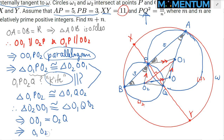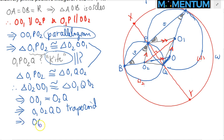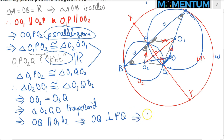So O1O2QO is a trapezoid — by symmetry the bases are parallel. OQ is a base parallel to O1O2. But earlier we know O1O2 was perpendicular to PQ, suggesting OQ is also perpendicular to PQ. But PQ lies along chord XY, so a perpendicular from center O to XY hits XY at its midpoint. This further implies Q is the midpoint of XY — and this is the crux move of the problem.